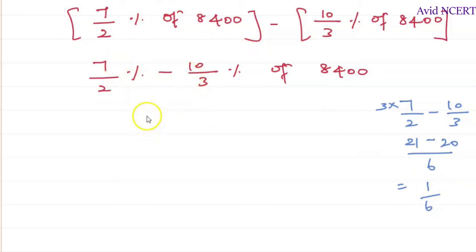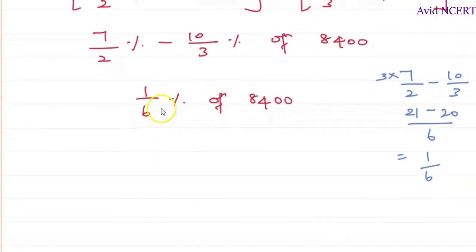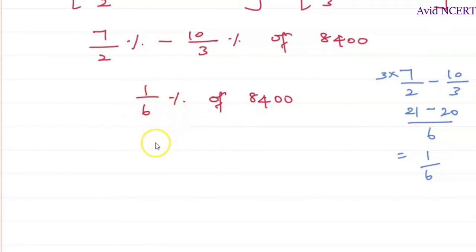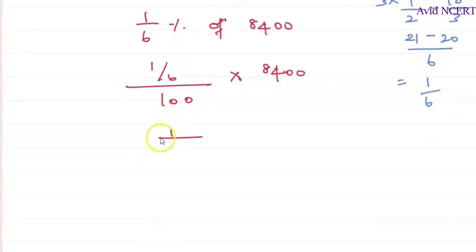So the difference of this is 1/6 percentage of 8400. Now we follow the same steps as we did in the previous problems. So when they are asking for 1/6 percentage, it is 1/6 divided by 100, and of is times multiplication, and 8400.